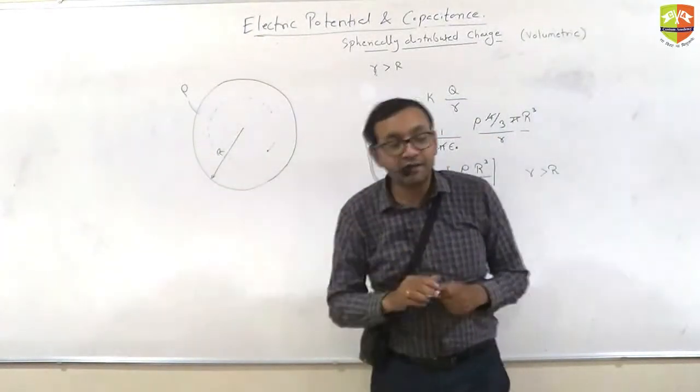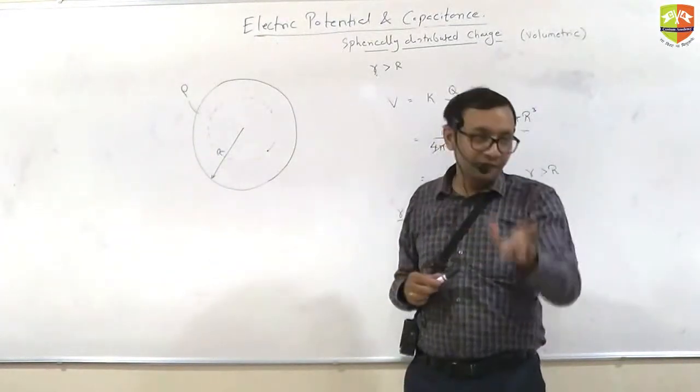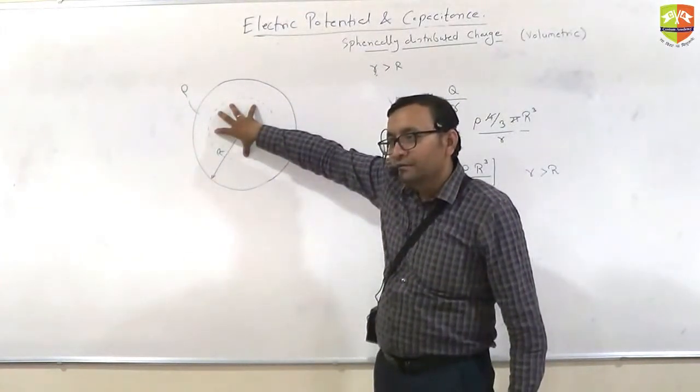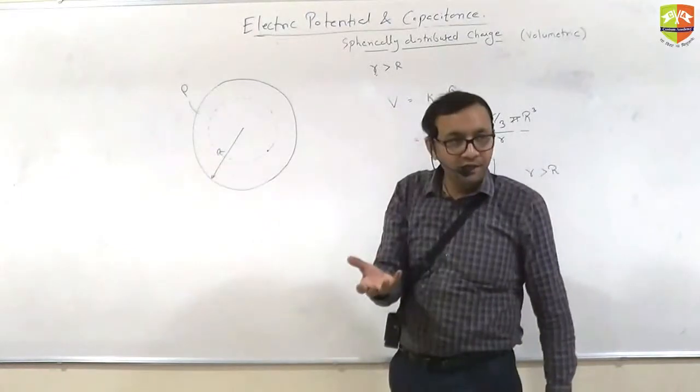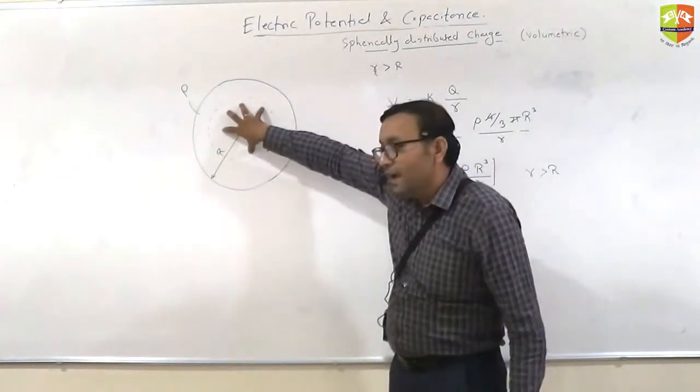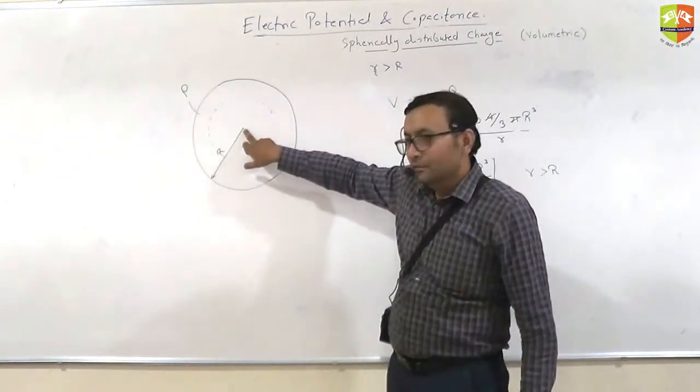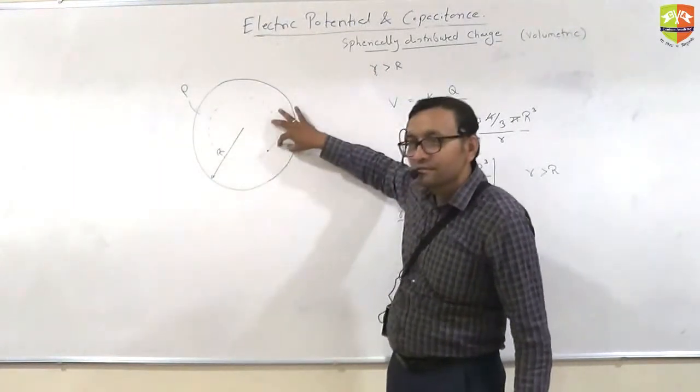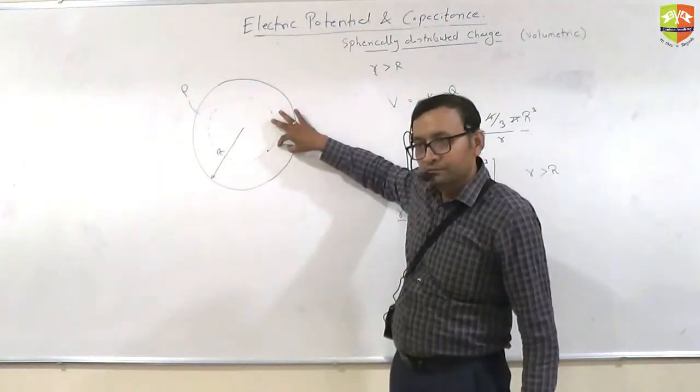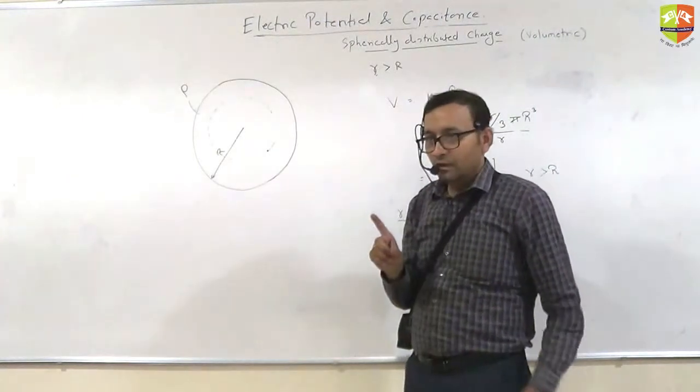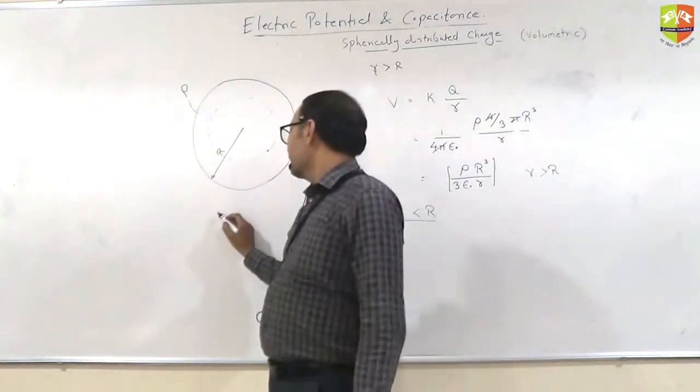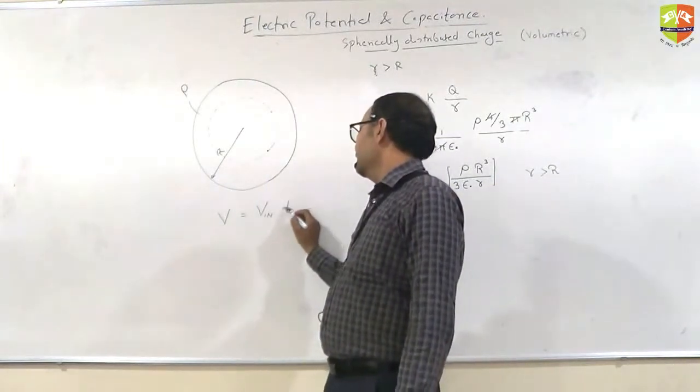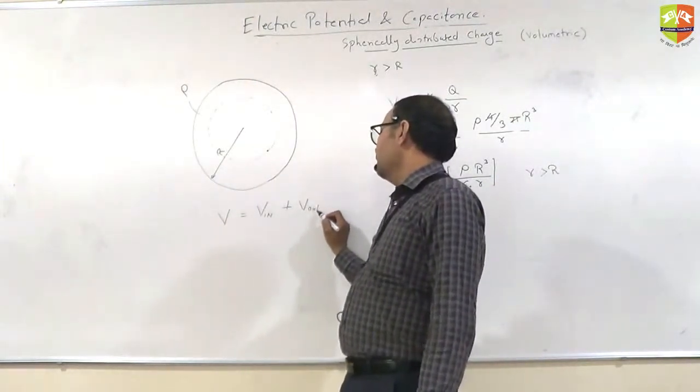Had it been electric field, suppose I want to ask electric field, then what will happen? Only this much charge will create electric field. But if it is potential, then this much charge will act like a point charge. And what will happen due to these charges, which potential will be zero because of these charges? No.